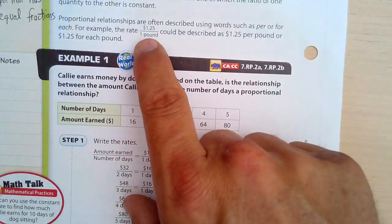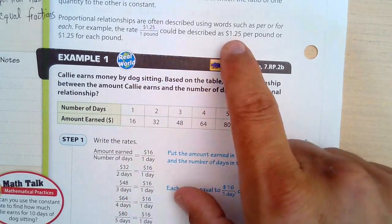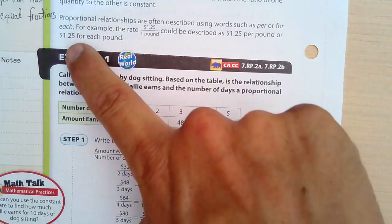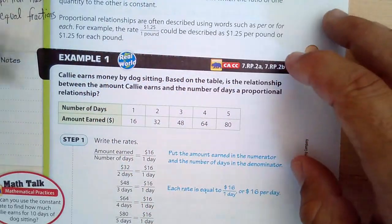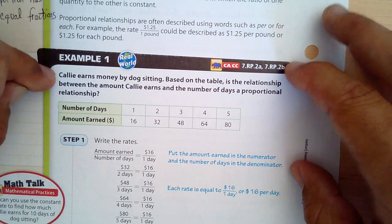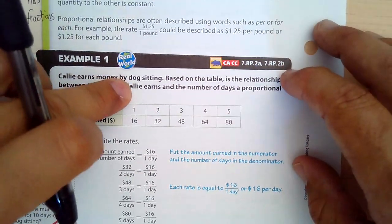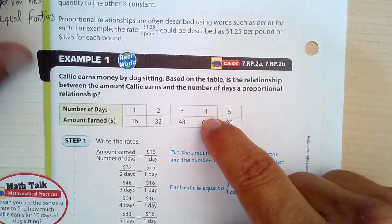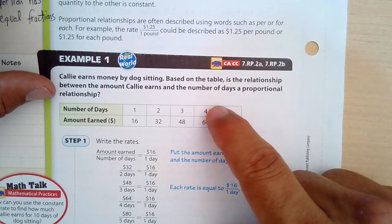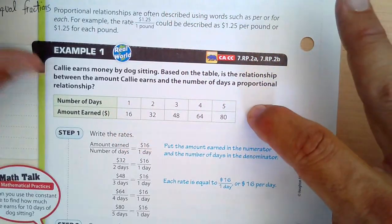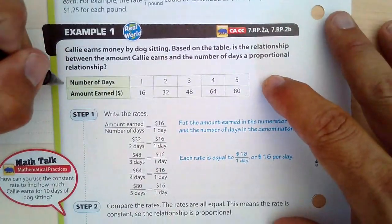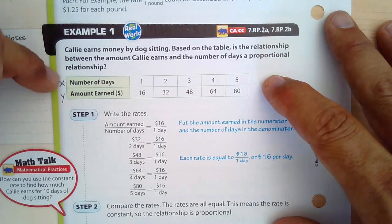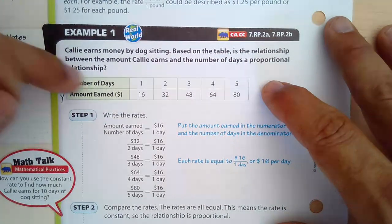Okay. So proportional relationships are often described using words such as per or for each. For example, this fraction can be described as $1.25 per pound, per pound, or $1.25 for each pound. In our example here, Kelly earns money by dog sitting, which is really cool, because you shouldn't be sitting on dogs. Just kidding. Based on the table and this relationship between Kelly earns and the number of days is, is this a proportional relationship? So what we do is we set up, we have the top is the X and the bottom one is the Y,